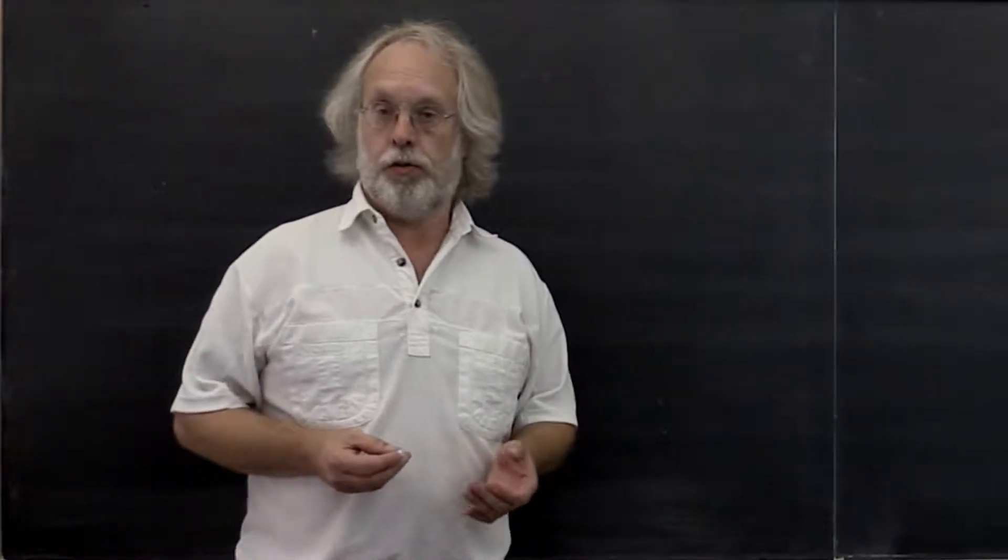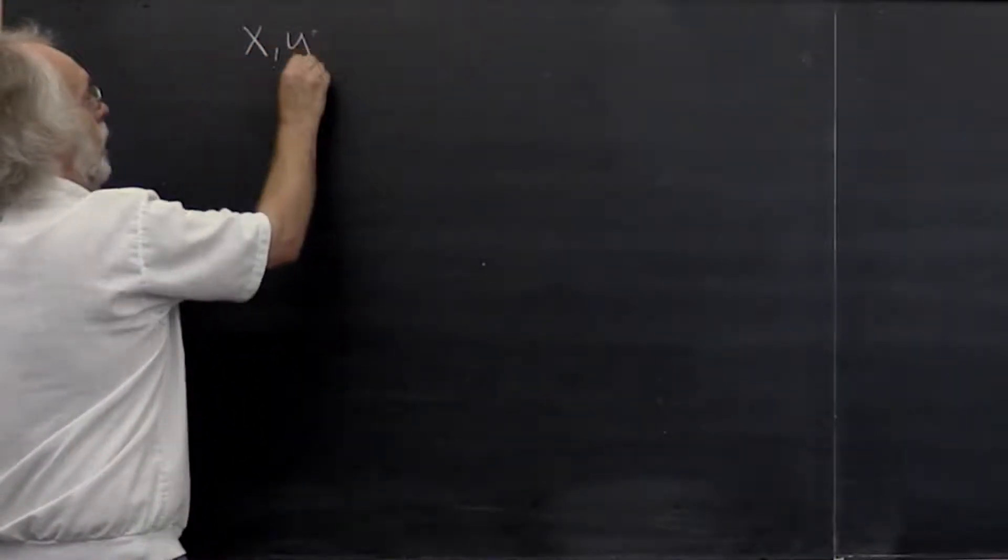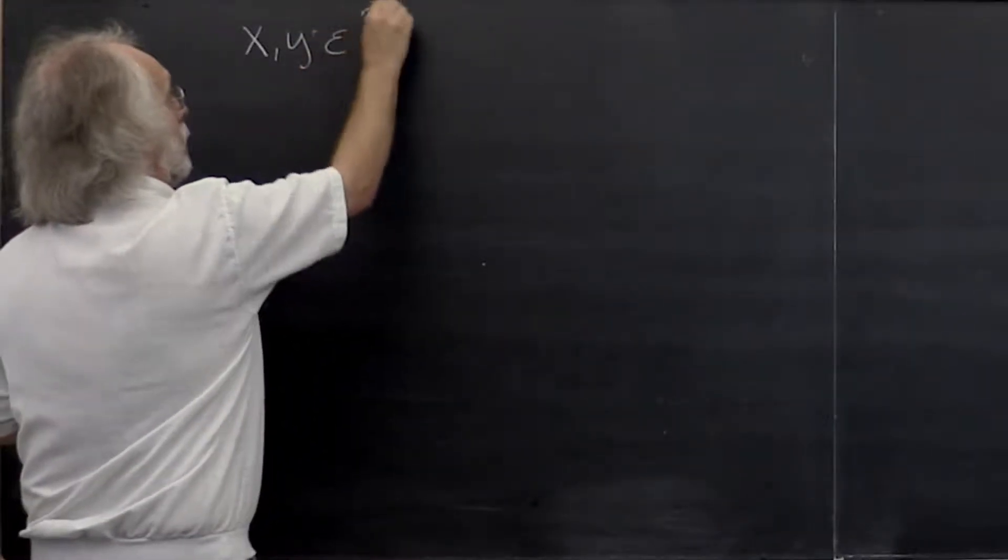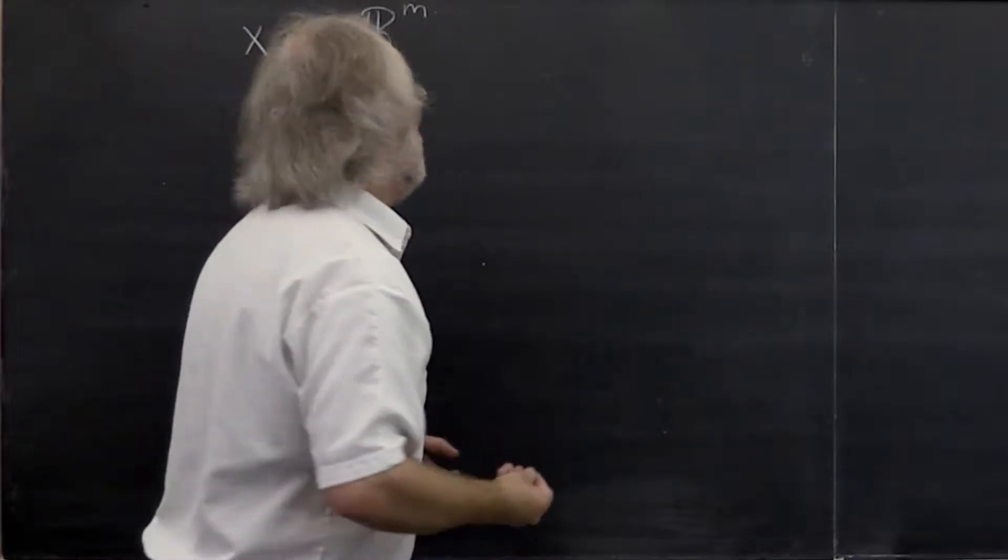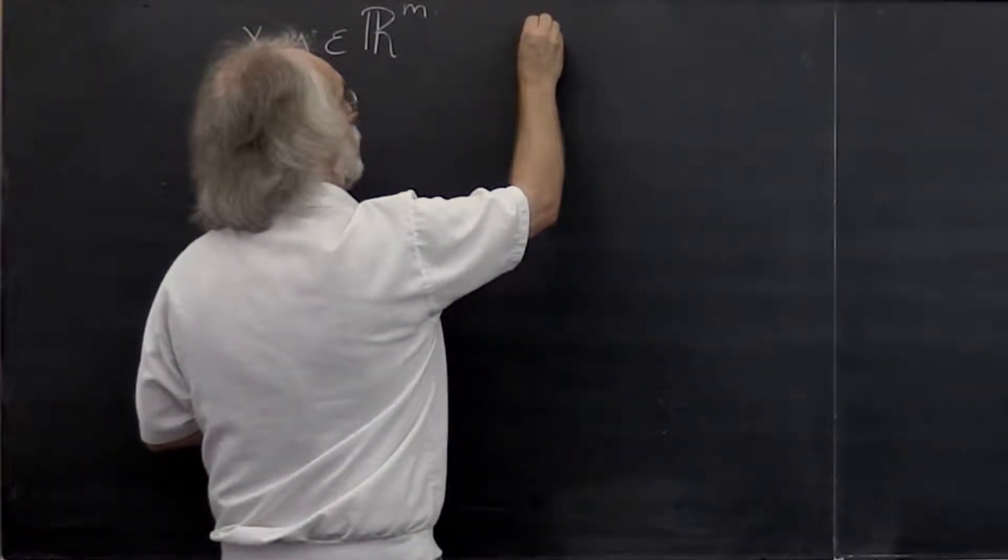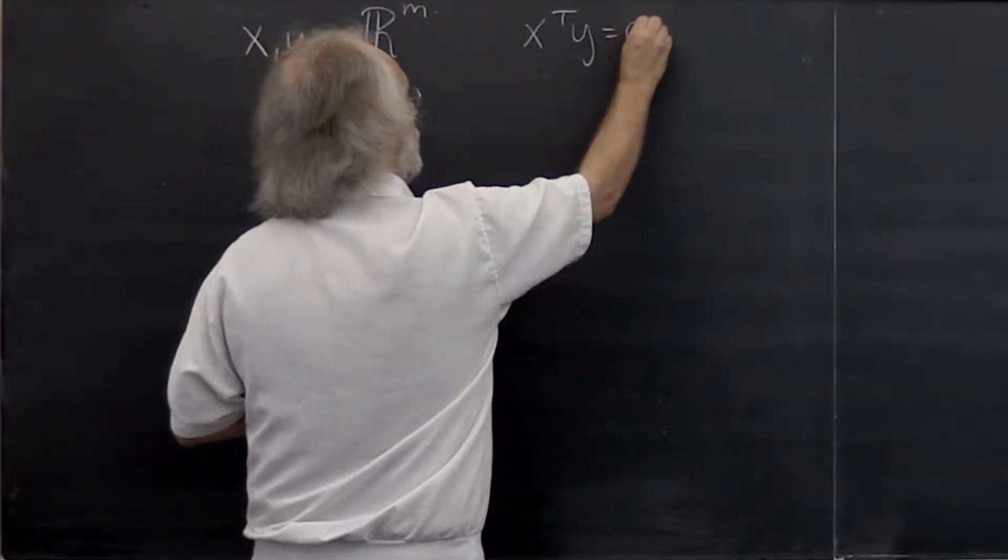Let's quickly revisit orthogonal vectors. If we have two vectors x and y in R^n, then at some point you learned that these two vectors are orthogonal or perpendicular if x transpose y is equal to zero.